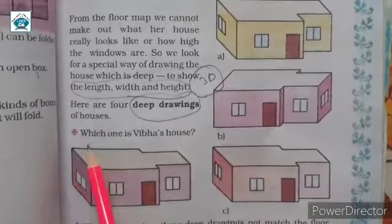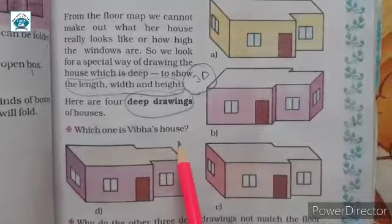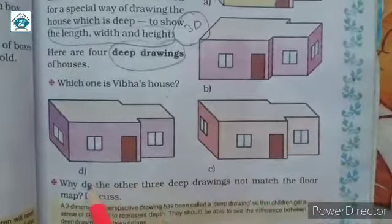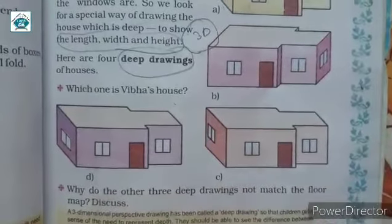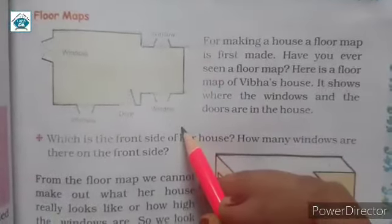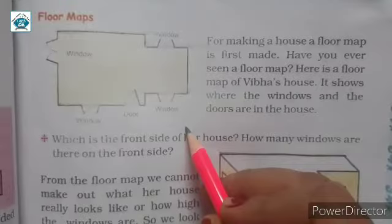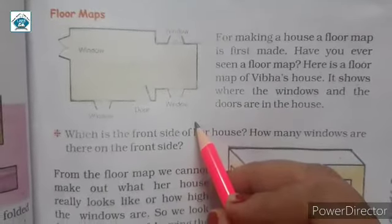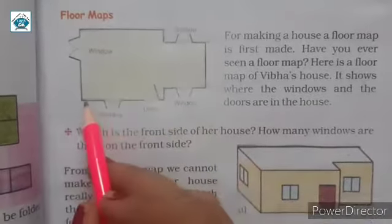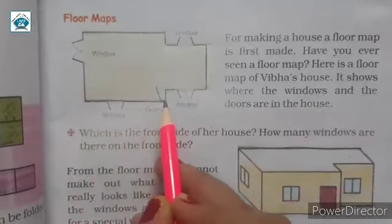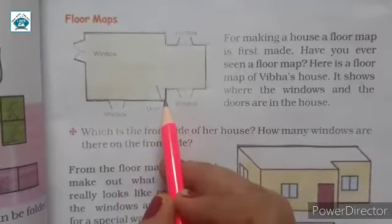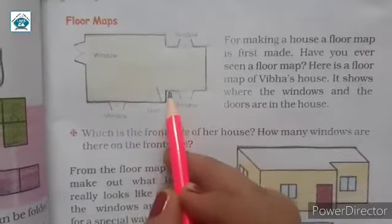Now question. Which one is Vibha's house? A, B, C and D. So first we have to check Vibha's house with A. So we can see here Vibha's house front is straight line and then going to inside and then straight. Similarly back.